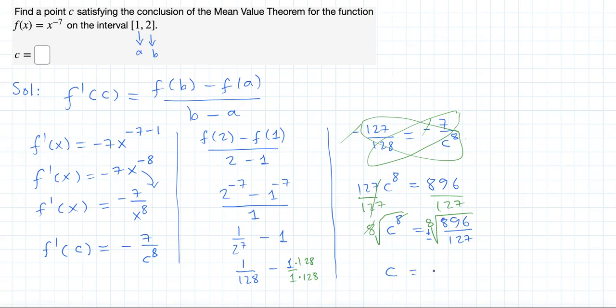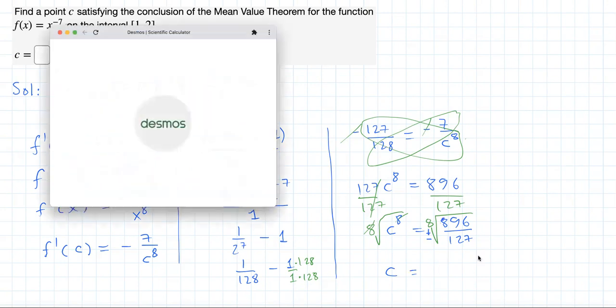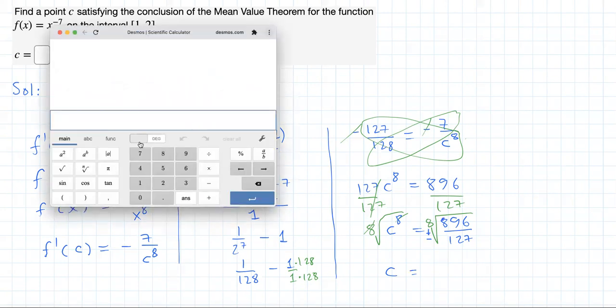So what we're going to get is ±(896/127)^(1/8) in exact form. I'm going to calculate it now and approximate it to three decimal places for accuracy. The 8th root of the fraction: numerator 896, denominator 127.